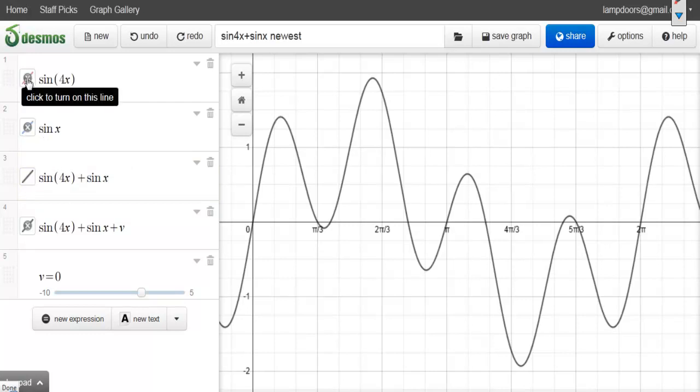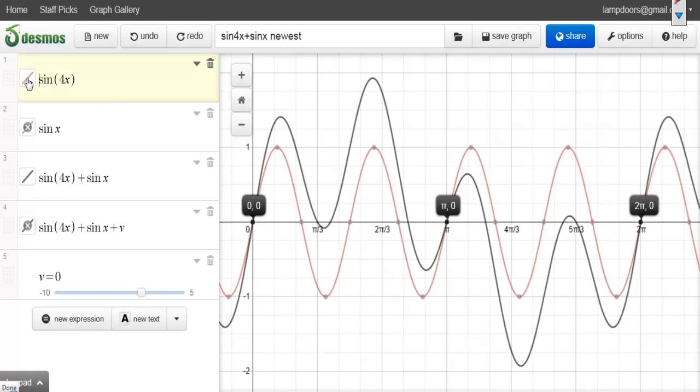So let's first start by graphing sine 4x. And that's got a period of pi over 2 because it's 2 pi divided by 4. So if you're just graphing sine 4x, you would just go from 0 to pi over 2. And halfway in between, you would have pi over 4 right there. And it has an amplitude of 1.